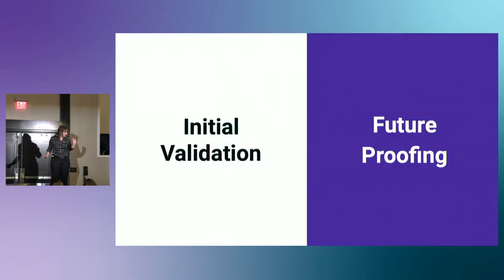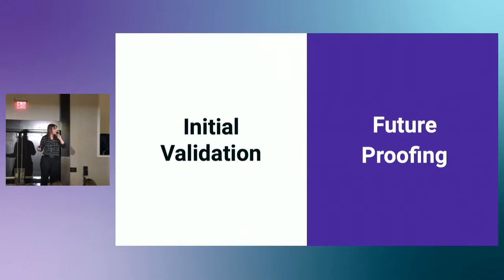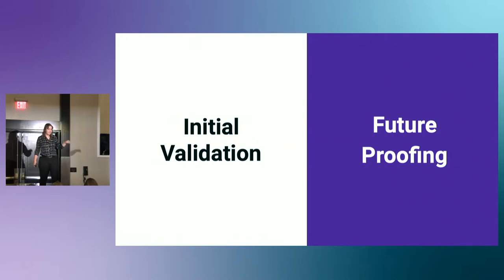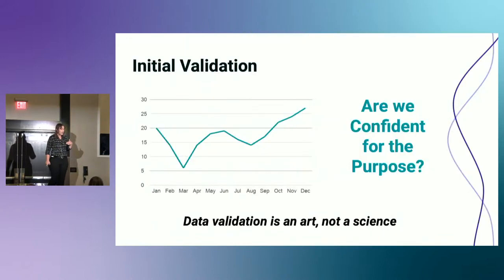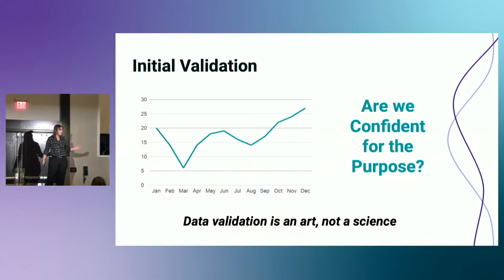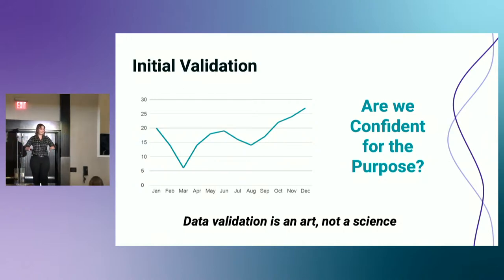I want to talk about testing for a minute. There are kind of two different ways that we like to think about testing: one is the initial validation, and the second is future-proofing. We often think of them all smushed together, but really we use different skills to do each one. On the initial validation, we want to say, are we confident for this purpose? Does it need to be 80% correct, or does it need to be 99.99999% correct? Those are two very different levels of validation.